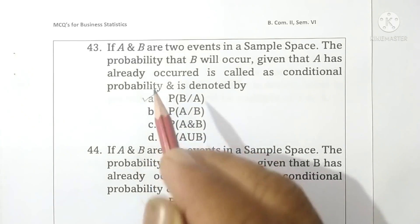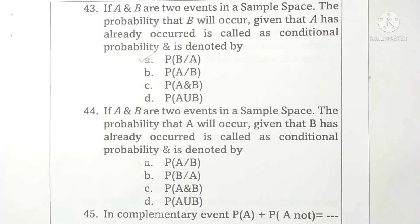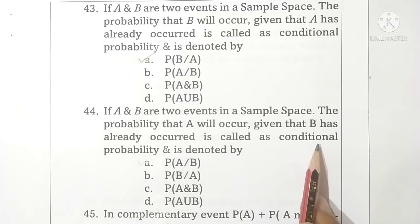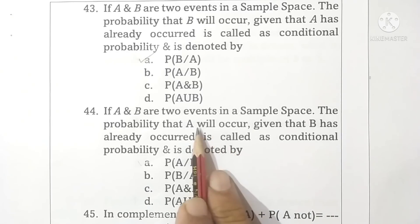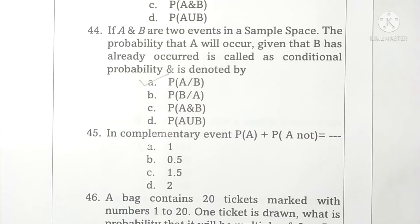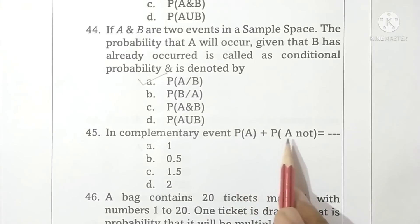Question 44: If A and B are two events in a sample space, the probability that A will occur given that B has already occurred is called conditional probability and is denoted by probability of A given B. Option A is correct. Question 45: In complementary events, probability A plus probability A-not equals 1. Option A is correct.